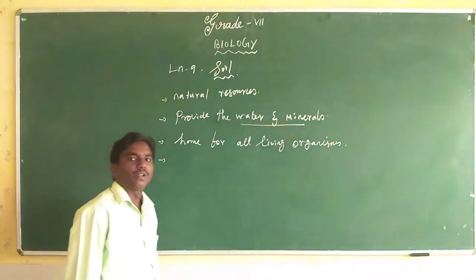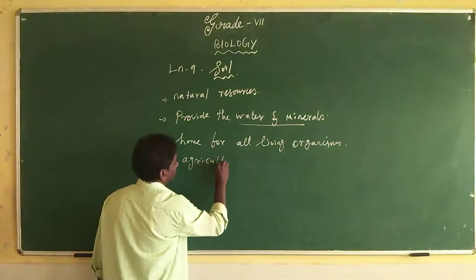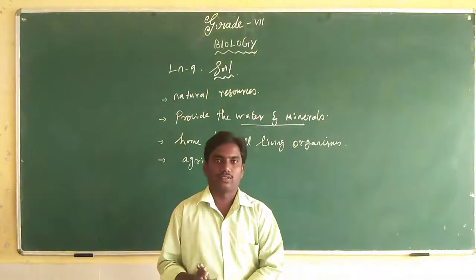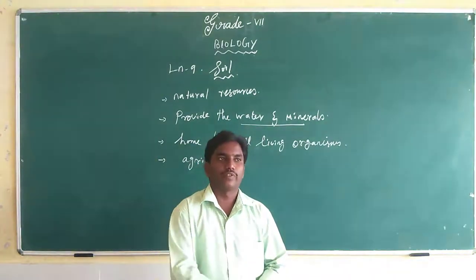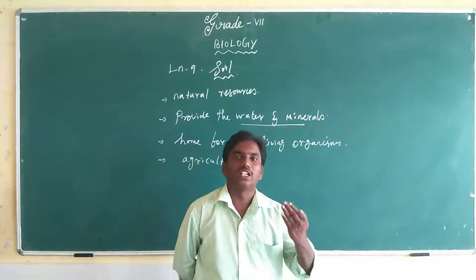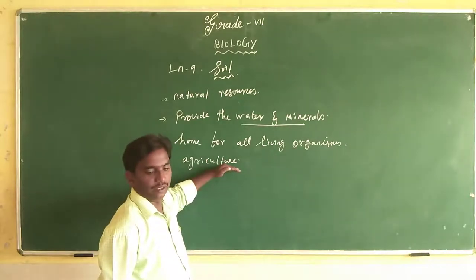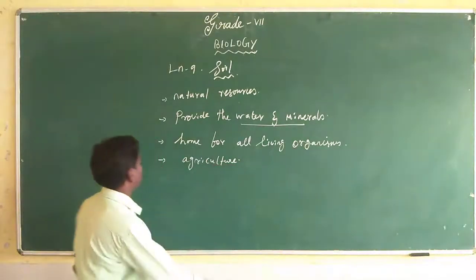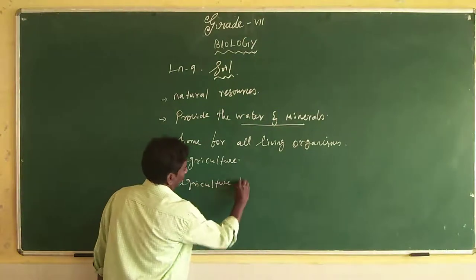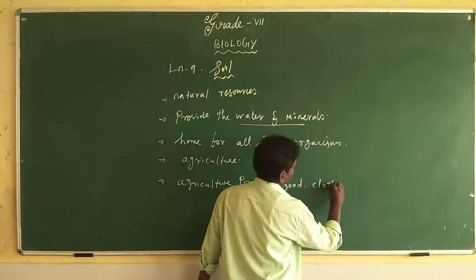The soil is very important for agriculture. It is very useful for agriculture workers. The soil can be used for agricultural practice. Without agriculture, we can't get food from the soil surface, and without soil, we can never do any agriculture. So soil is essential for agriculture, and agriculture provides food and shelter.